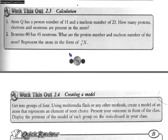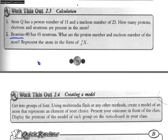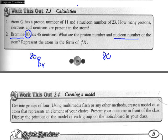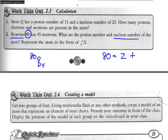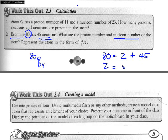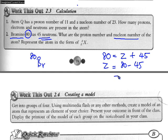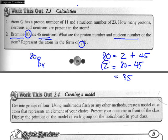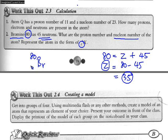Therefore, coming back to this question, bromine has the symbol Br. 80 represents the nucleon number. The nucleon number 80 is equal to the proton number Z plus the number of neutrons, 45. Therefore, Z equals 80 minus 45, which equals 35. So I can write Z, the proton number, as the subscript of this symbol.